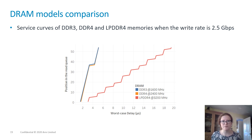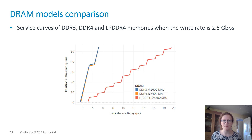The LPDDR4 memory tested has significantly longer delays, largely due to its packaging requests differently. The same write bitrate as in the other two memory types results in twice the request rate, and most of the time costs come per packet rather than per bit.